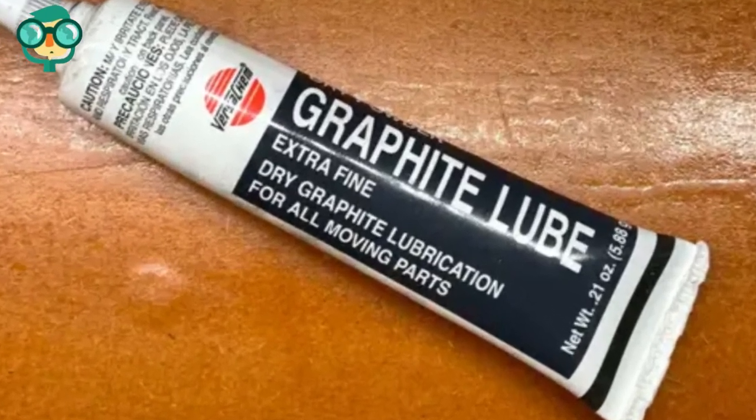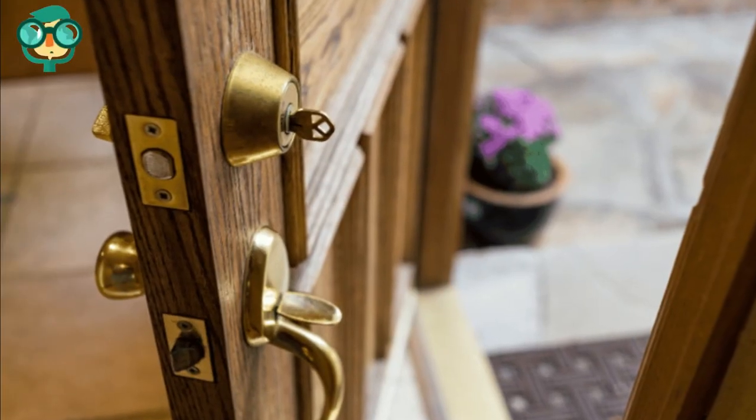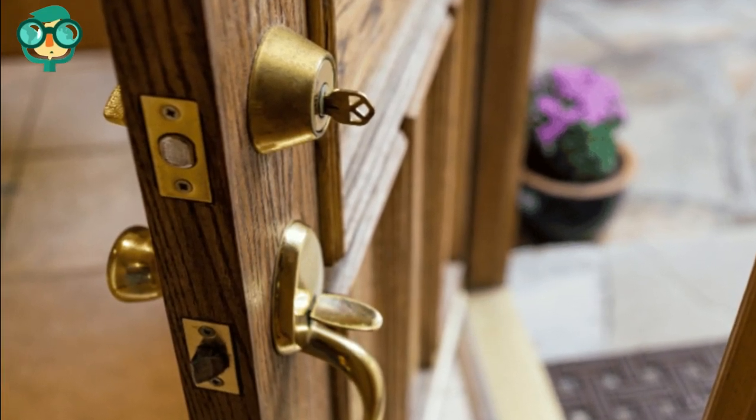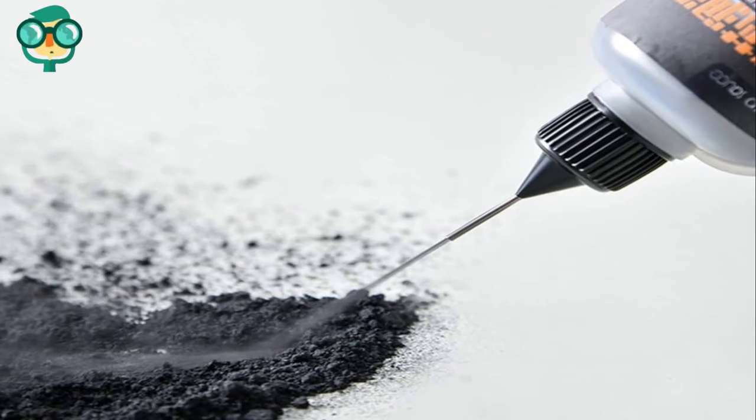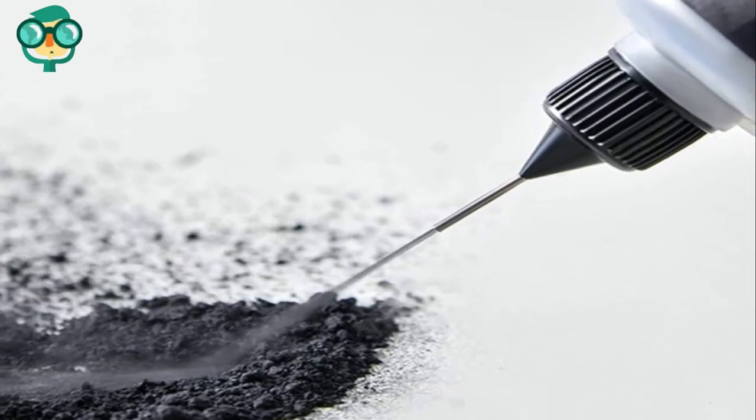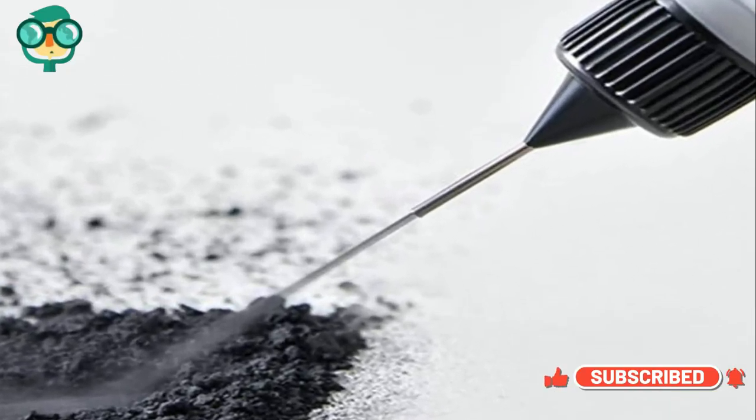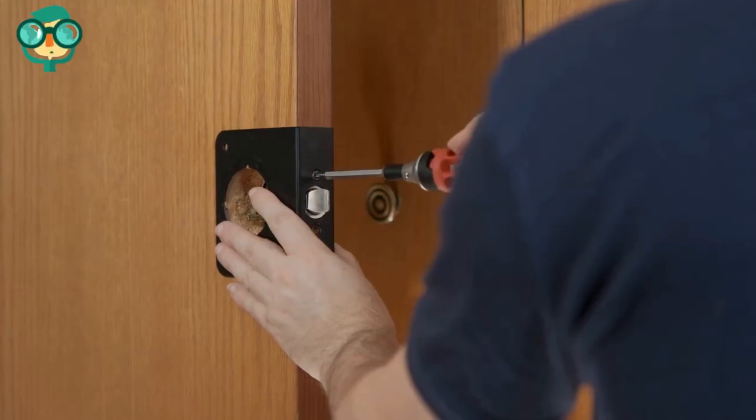Apply graphite lubricant to all parts of the deadbolt. Make sure all of the parts of the lock are dry. Then, apply graphite lubricant to all parts of the lock. Squeeze some graphite into the keyhole, as well as onto the cylinder and other moving parts. Put the lock back together.